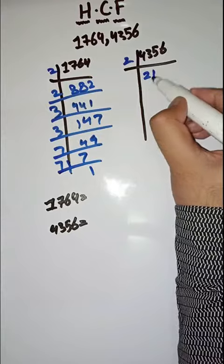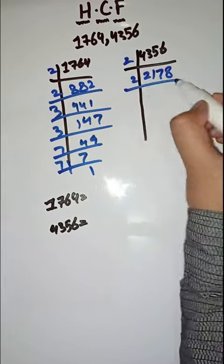Prime factors of 4356. We start with 2, dividing repeatedly: 2178, then 1089, continuing with 2.